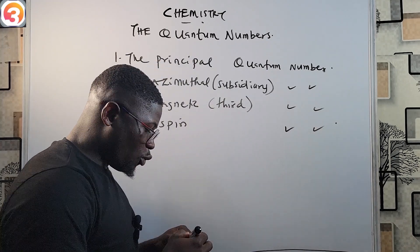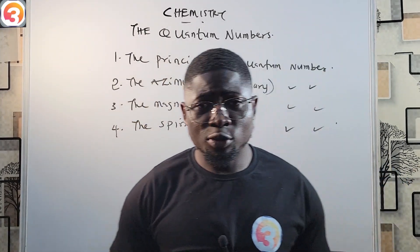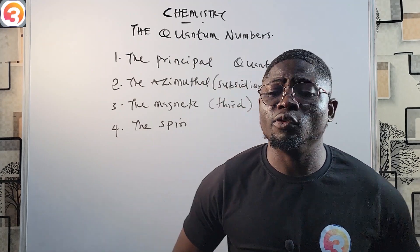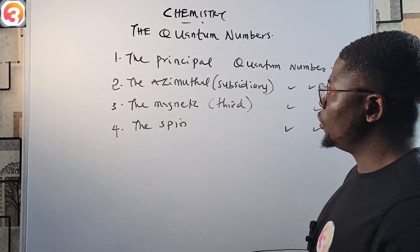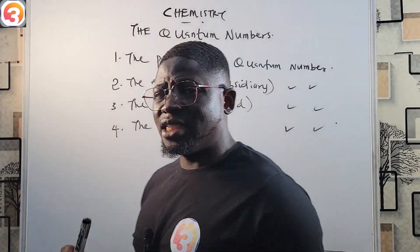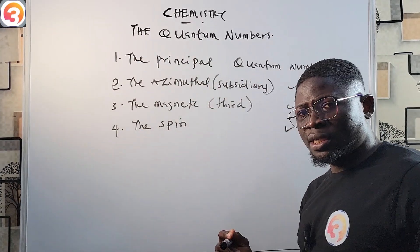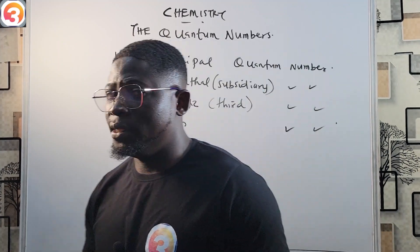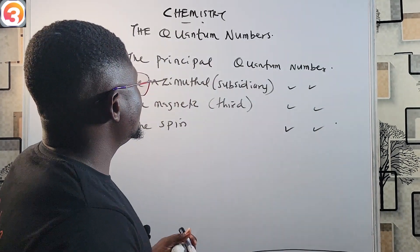So these are the four quantum numbers that Niels Bohr used to explain the results of his experiments. For the purpose of this class we are going to look at the principal quantum number alone, and the next class will take the next one accordingly.